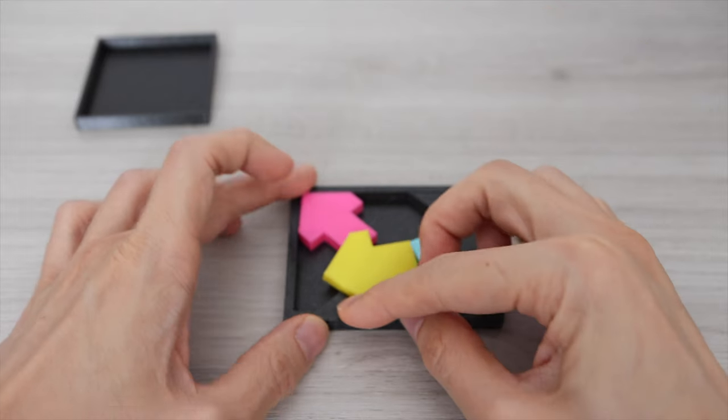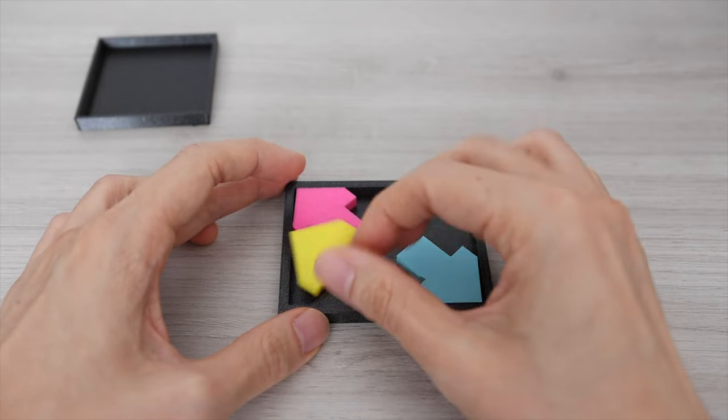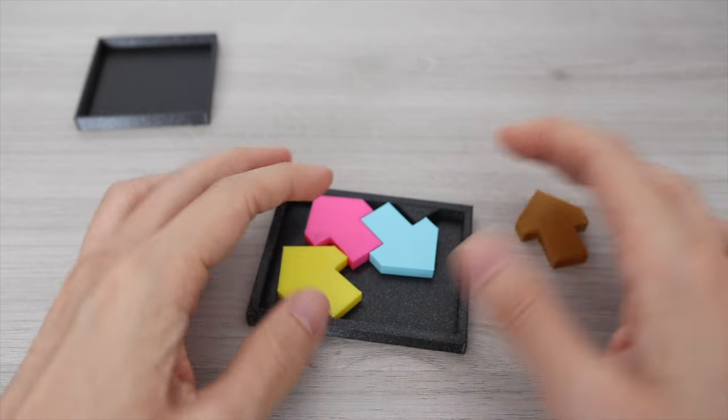Then I tried the same arrangement as with the square tray to see if I can minimize the empty spaces between the arrows but still no luck.